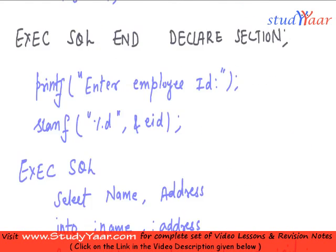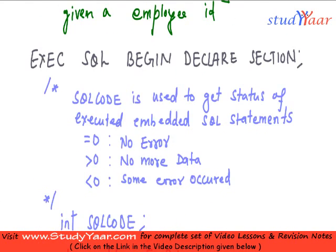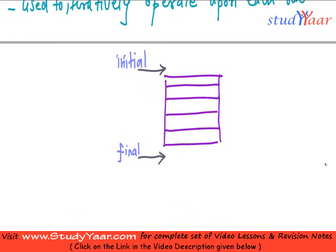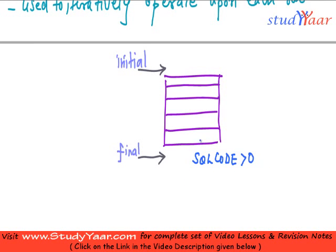When SQLCODE is greater than or equal to zero it indicates no more data. So SQLCODE greater than zero indicates this final cursor position. In your for loop, you check for SQLCODE greater than zero — whenever you get that condition, it means you have operated upon all of the rows in the result of your query.